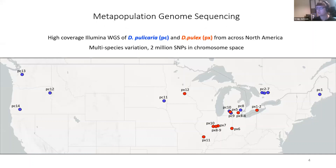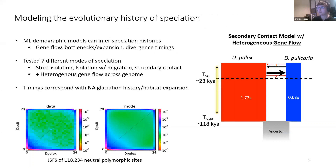We sequenced Daphnia from across North America — Pulicaria in blue and Pulex populations in red — to capture the species-wide genetic variation across the continent. This metapopulation study allows us to investigate the complete genetic variation across both species in chromosome space using the new chromosome-scale assemblies. With this cross-species variation, we used maximum likelihood demographic models to infer the history of speciation, testing seven different modes of speciation. We found the genetic data best fit with the secondary contact model, where the two species were initially isolated, followed by a period of gene flow.